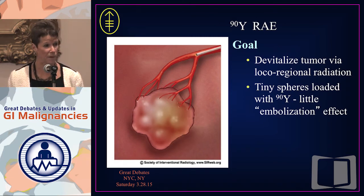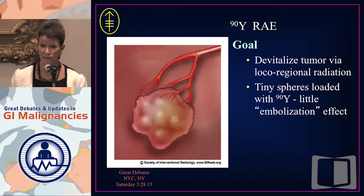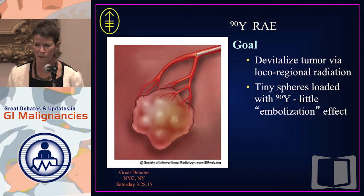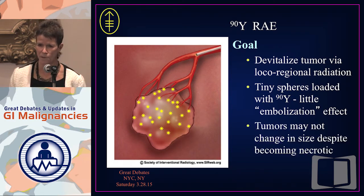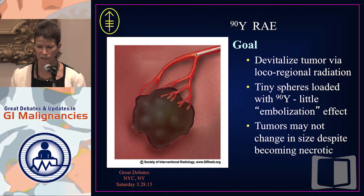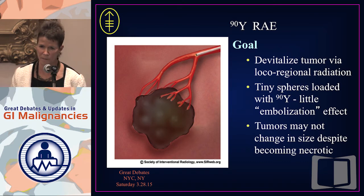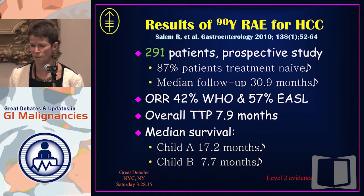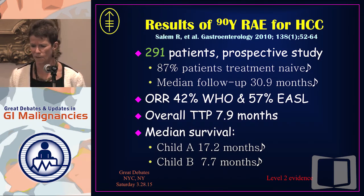Radioembolization is the new thing — everyone wants it, and patients read about it on the internet and come asking for it. There's no question it provides less post-embolization syndrome. The idea is that little spheres loaded with Y90 deliver internal radiation therapy; it's not really embolic. Sometimes tumors don't change in size so evaluation can be difficult, but usually not with multi-phase imaging. Some of the best results I've seen presented — these are retrospective, no prospective studies — show in the best patients, Child A, 17 months median survival; Child B, less than that.